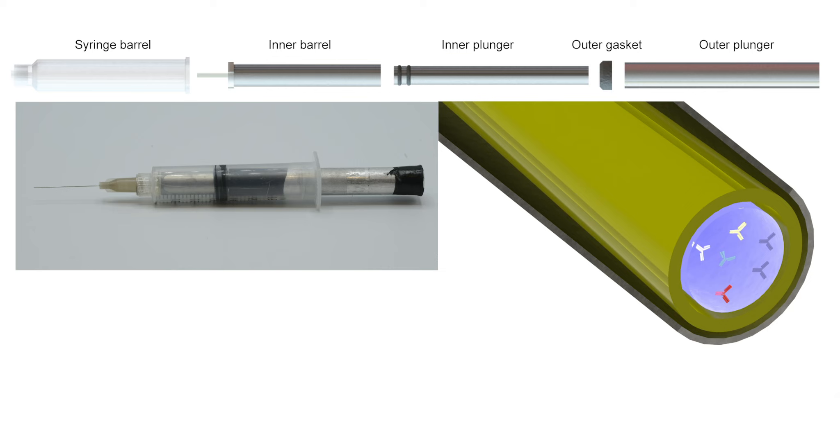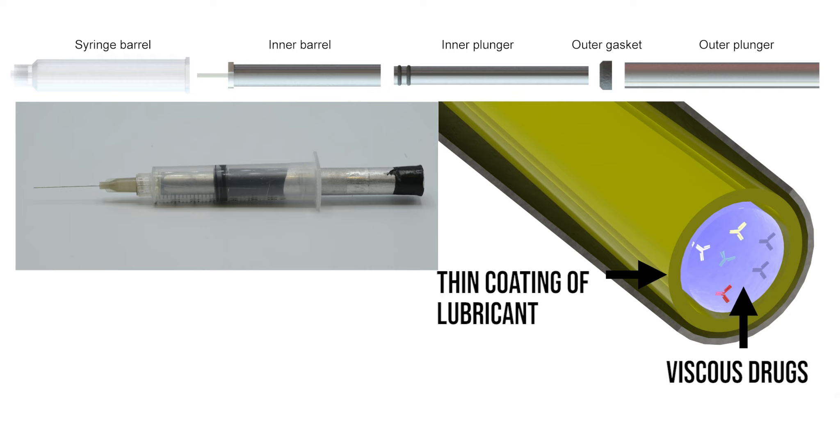The device consists of a syringe with two barrels, one inside the other, with the inner tube delivering the viscous drugs and the surrounding tube delivering a thin coating of lubricant to the drug as it enters the needle.